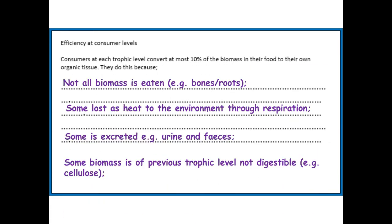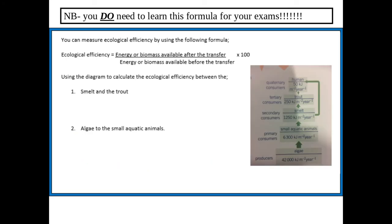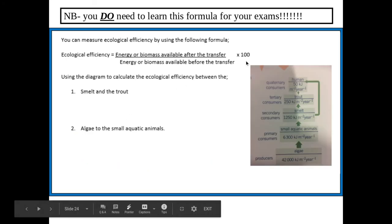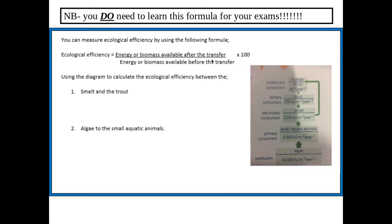One mark for 40, one mark for the units; one mark for 7,000, one mark for the units again. This was covered in part one. Looking at the mark scheme answer — it's pretty self-explanatory. The formula at the top here you definitely need to learn for your exams — it is not provided in the exam. Use the numbers from this diagram to answer these questions; pause the video now.